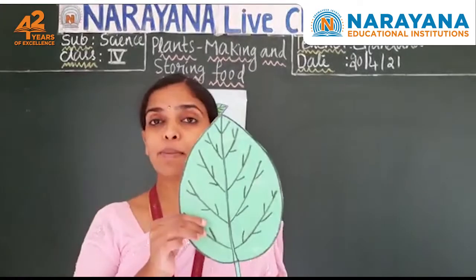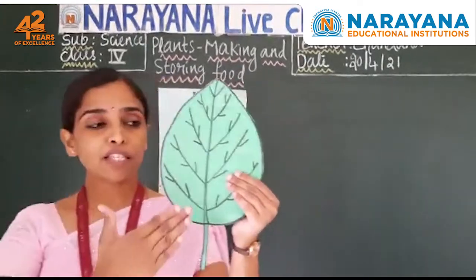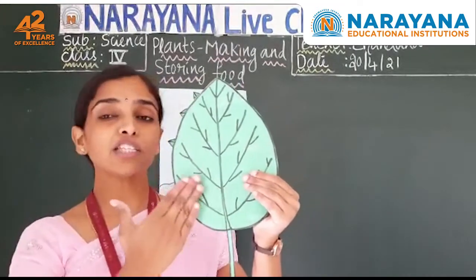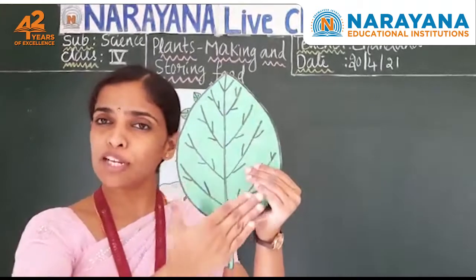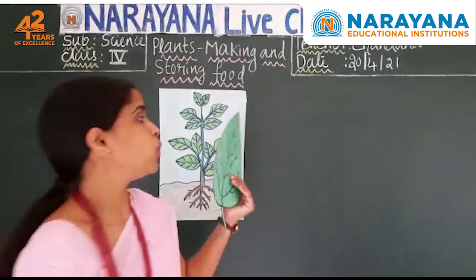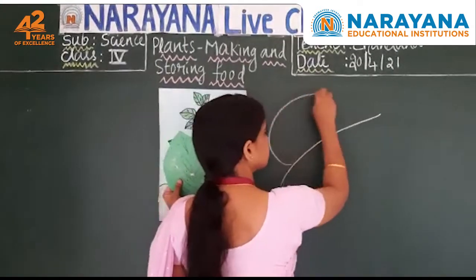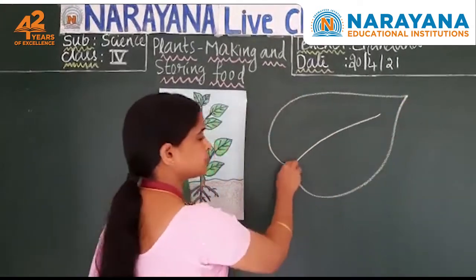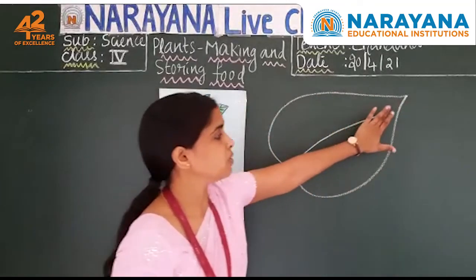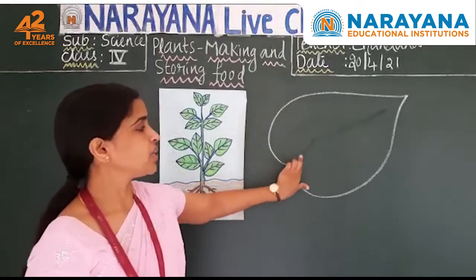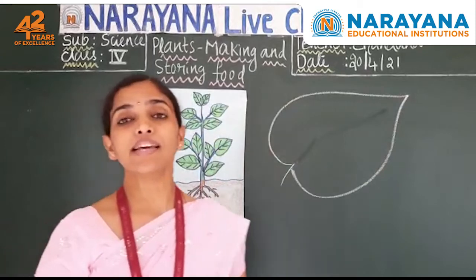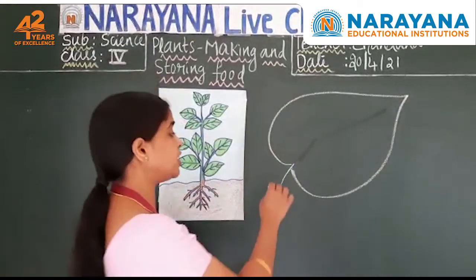This is a small TLM I have made. This flat green portion of the leaf is called the lamina. Can you see this flat green portion of the leaf? This is called the lamina.